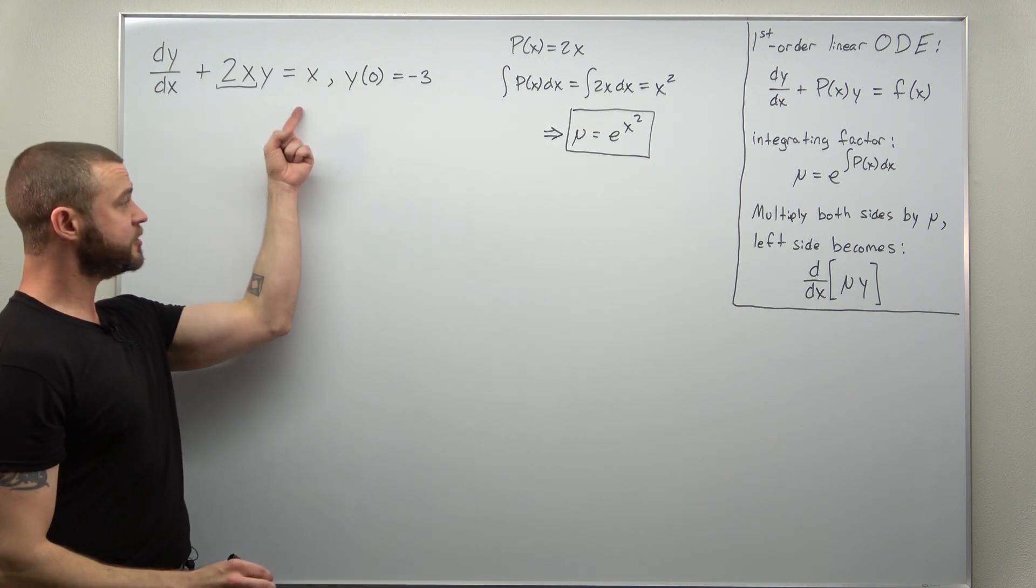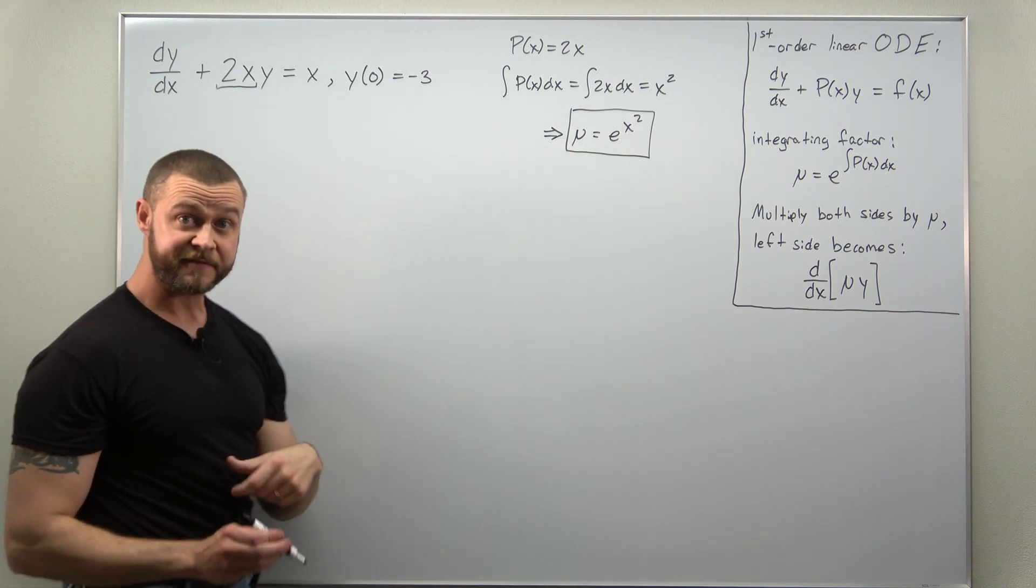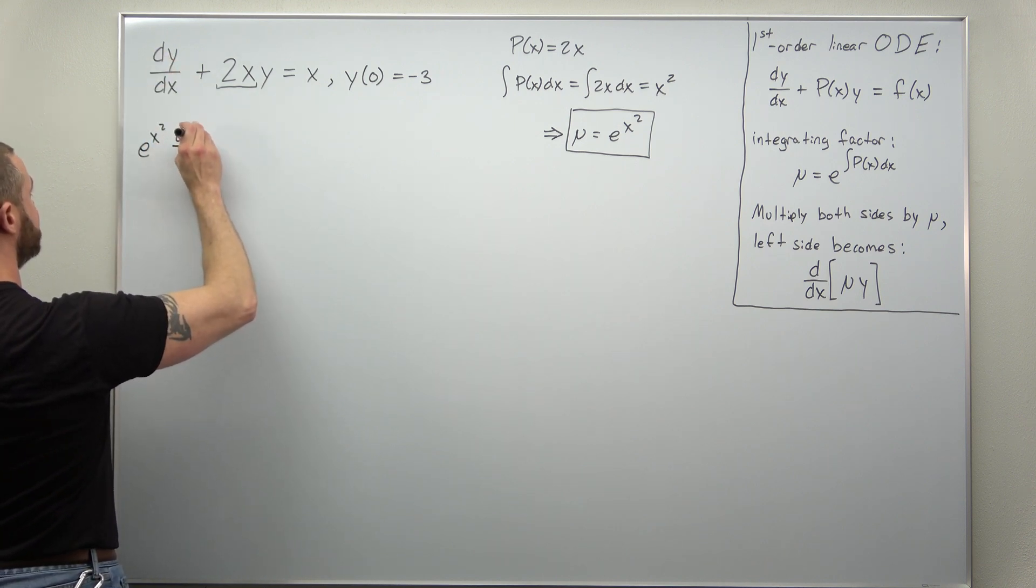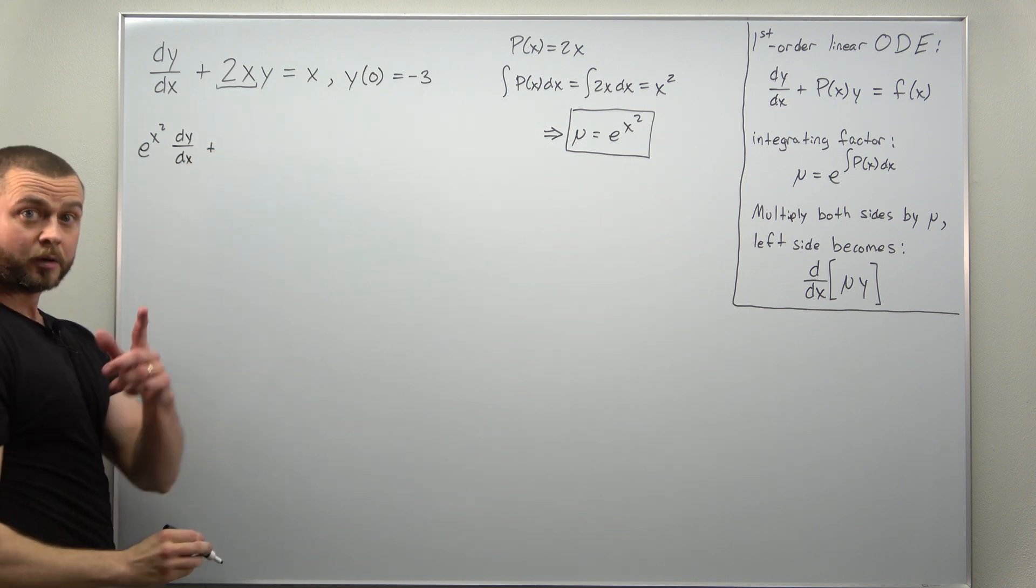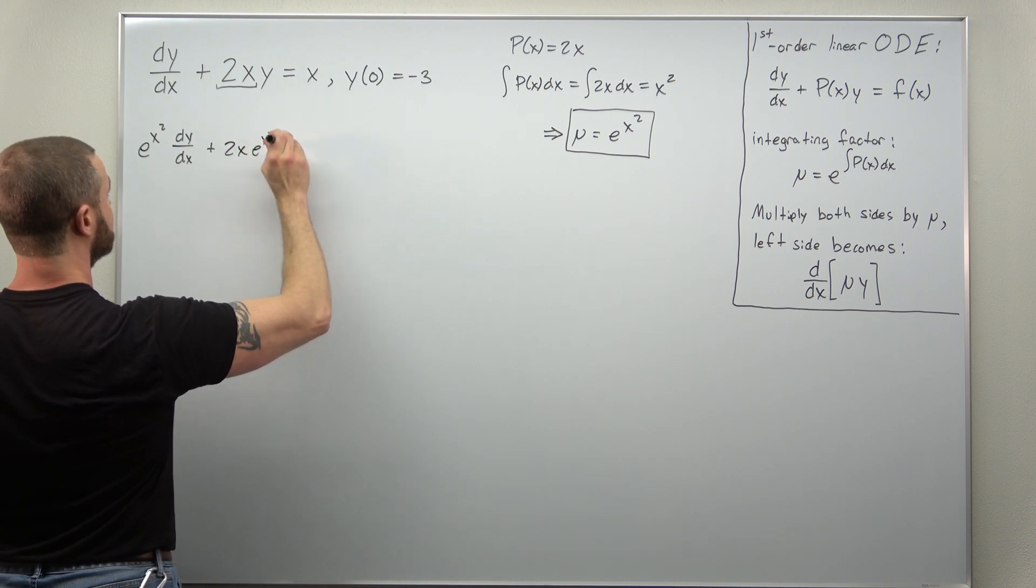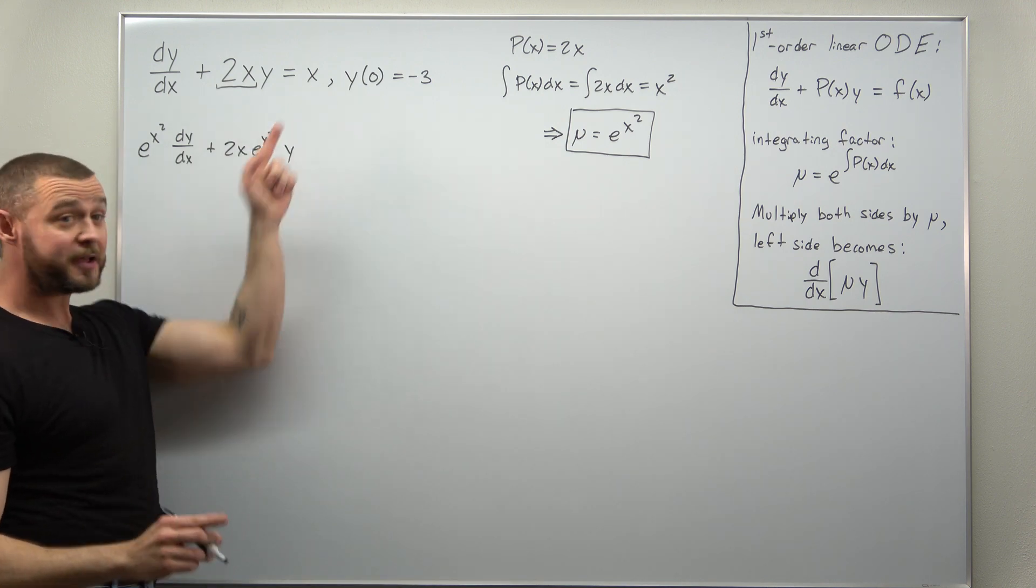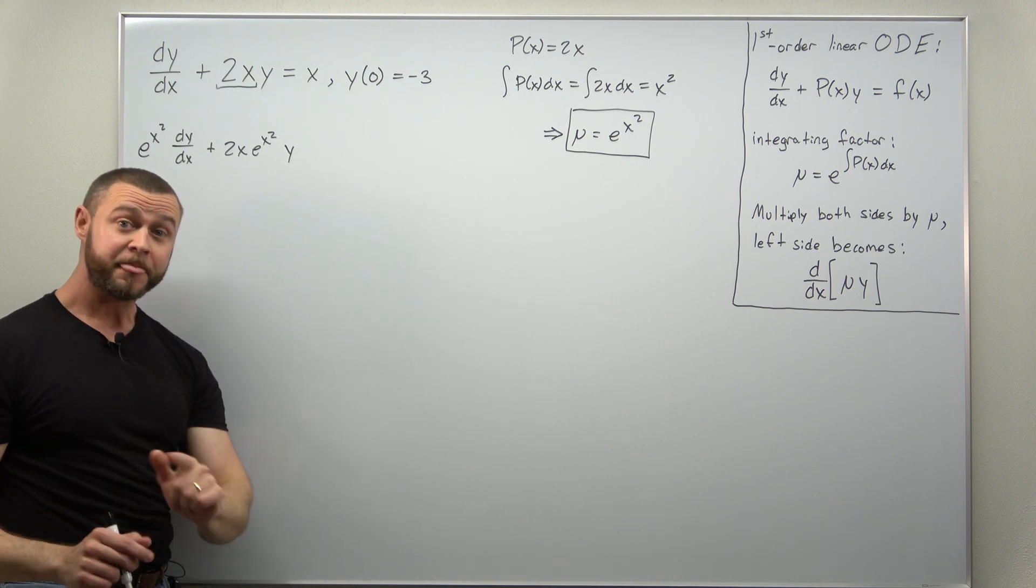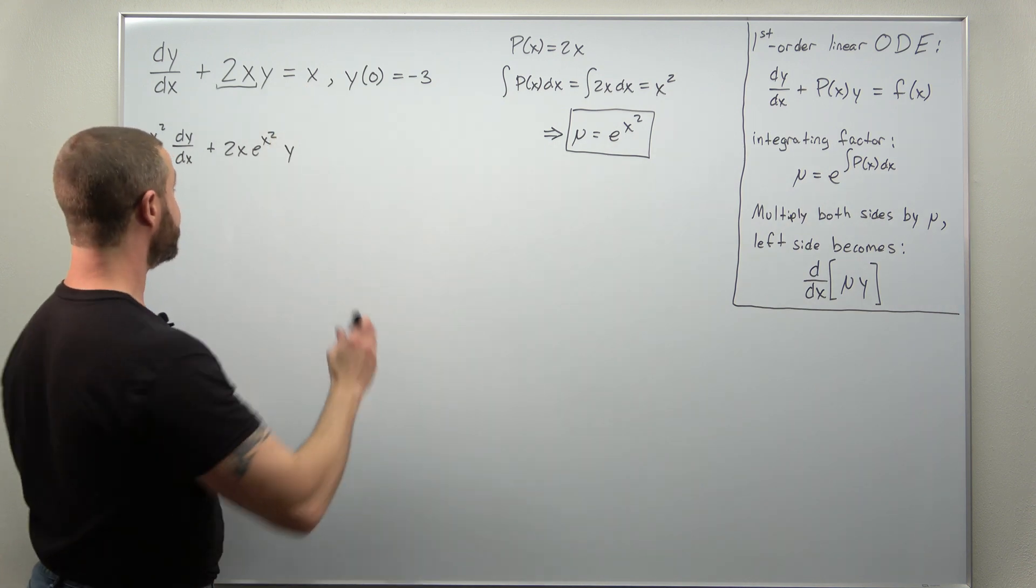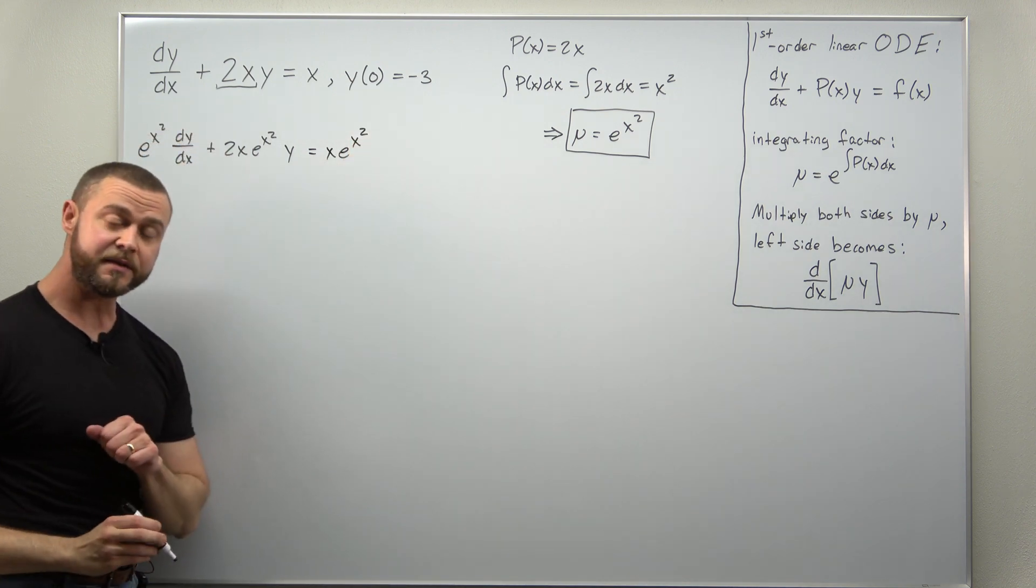Next we're going to go to our differential equation and multiply the whole equation, the left and right side, by the integrating factor e to the x squared. So we'll get e to the x squared times the derivative plus now 2x times e to the x squared times y. And it's worth pointing this out: don't forget to multiply the right side by the integrating factor as well. I've seen a lot of differential equation students forget that. So multiply the right side by the integrating factor. You'll get x times e to the x squared.